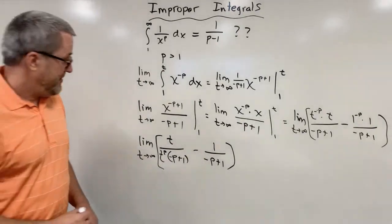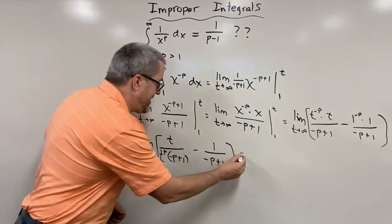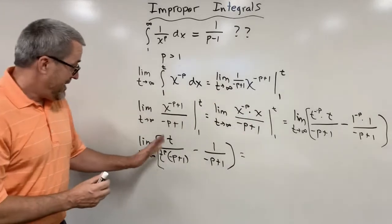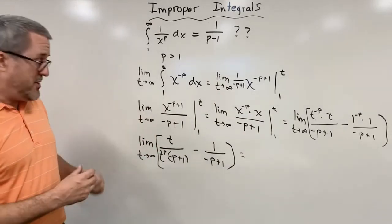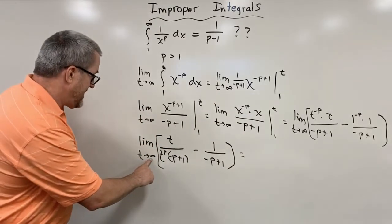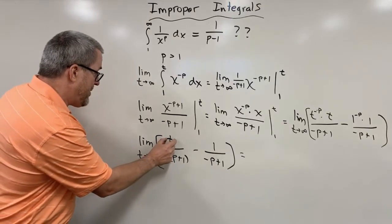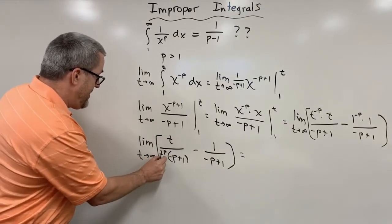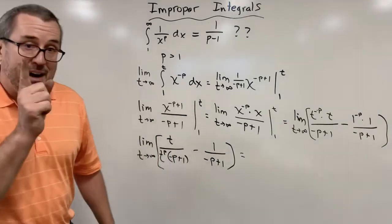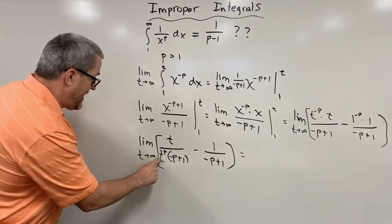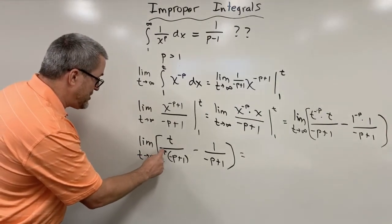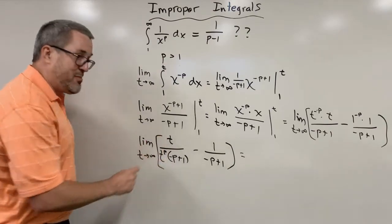Now, as t goes off to infinity, here's where this thing, we've seen it in the examples over and over again, but here's where we have to think a little bit more generally. As t goes off to infinity, the numerator is going off to infinity, the denominator is going off to infinity, but the denominator is going off to infinity exponentially faster than the numerator.